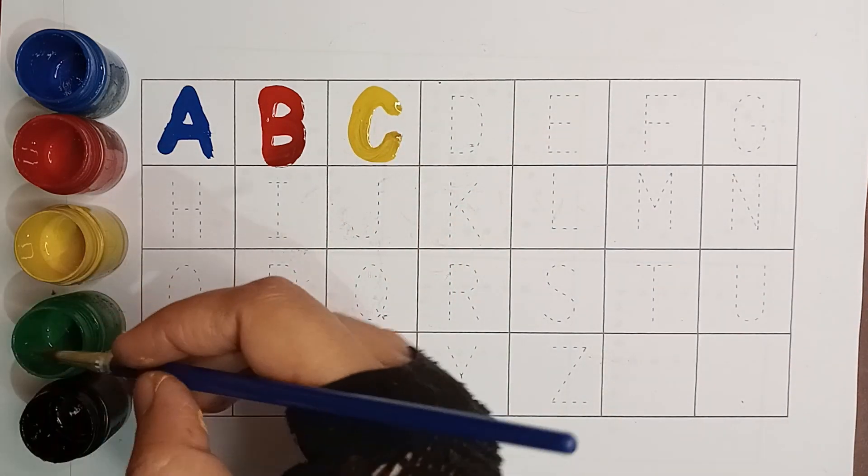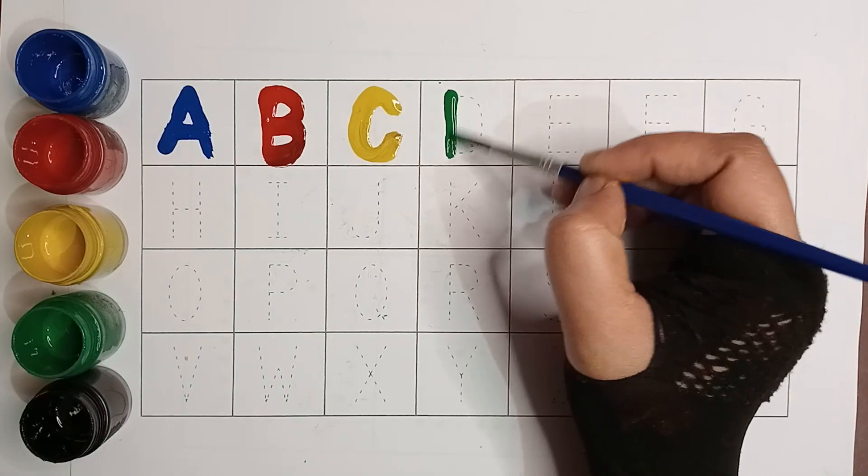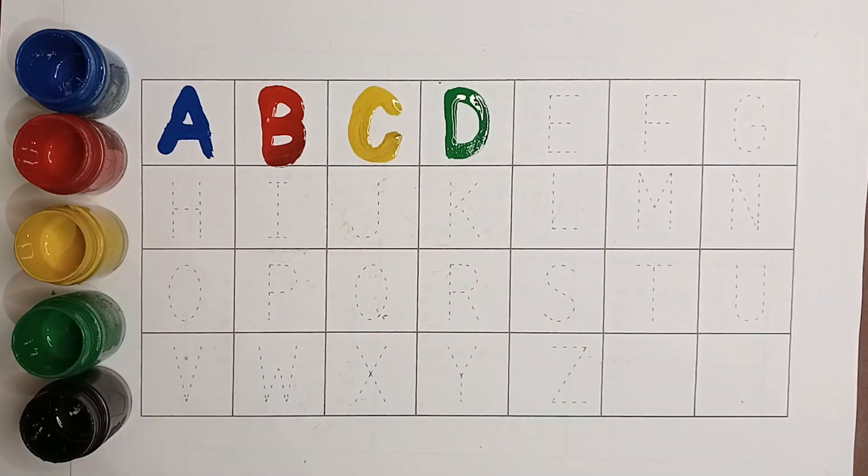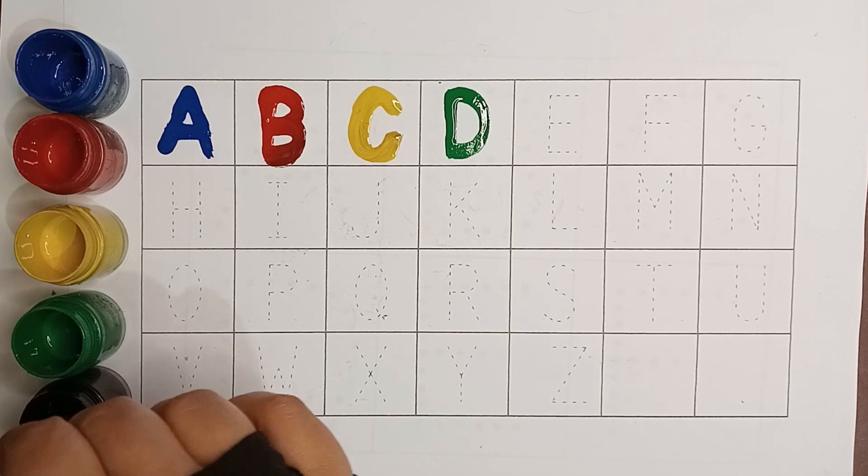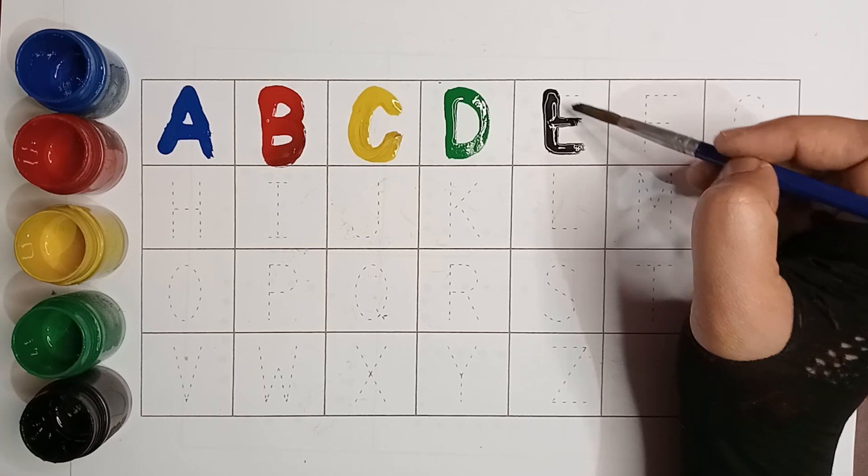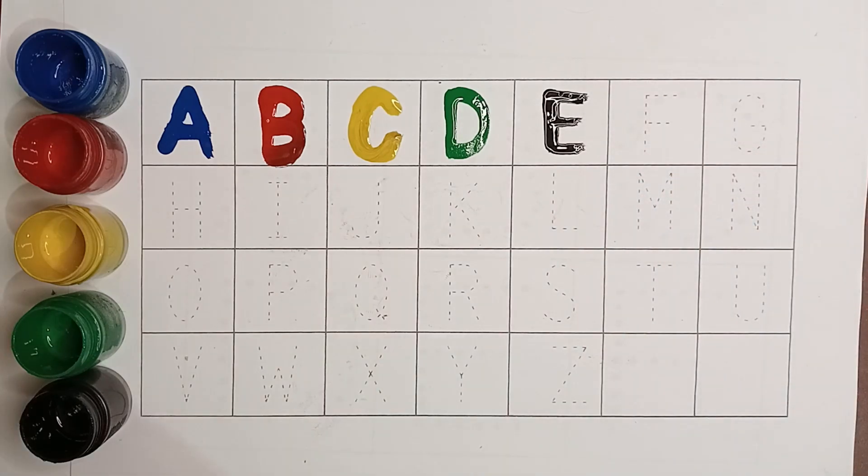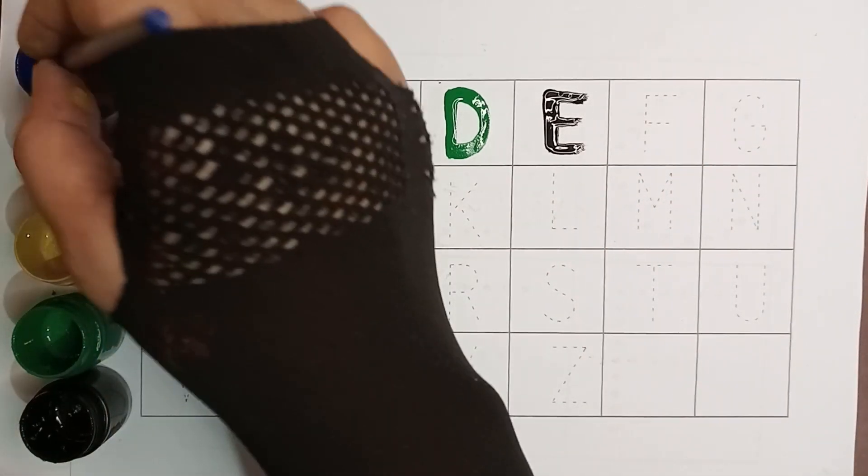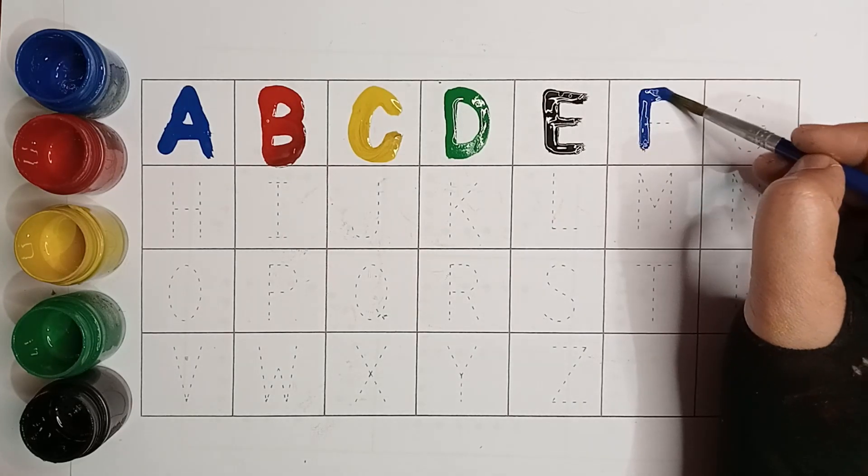Green color D. D for doll. Black color E. E for egg. Blue color F. F for fish.